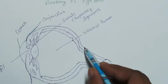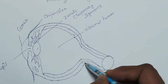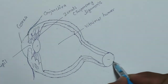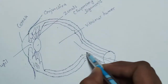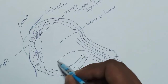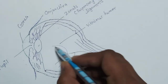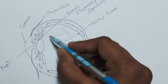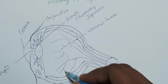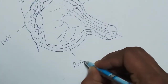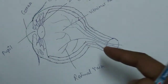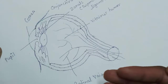This is the optic disc area. And here are also retinal veins and arteries entering — these are called retinal veins — which supply blood to the retina.